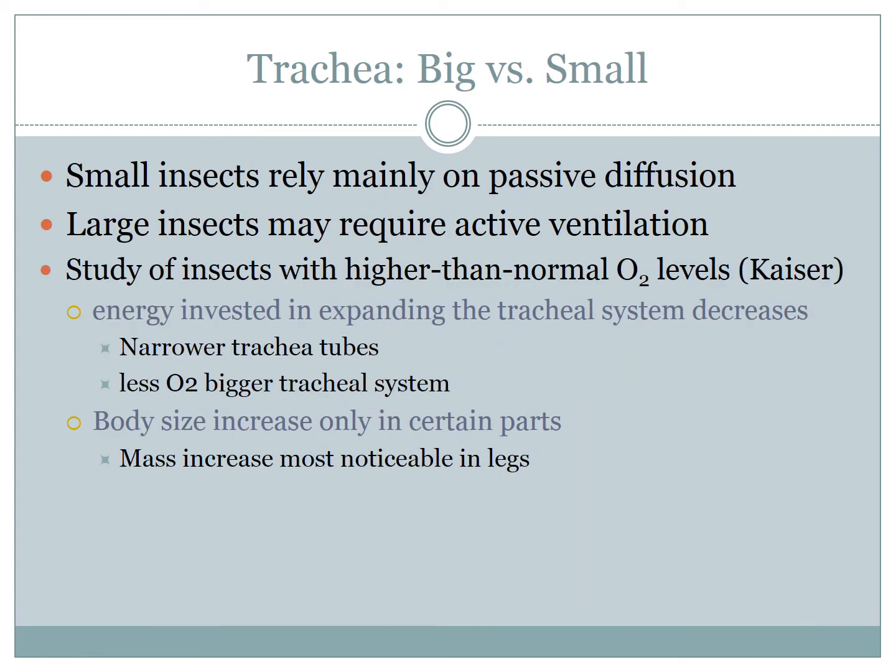Small insects may use passive diffusion due to their small body mass to trachea surface area ratio. Larger insects, on the other hand, may implement venting mechanisms to maintain homeostasis due to their increased body mass to tracheal surface area ratio.